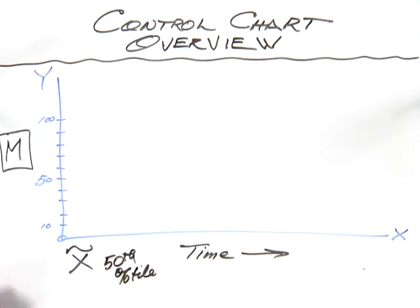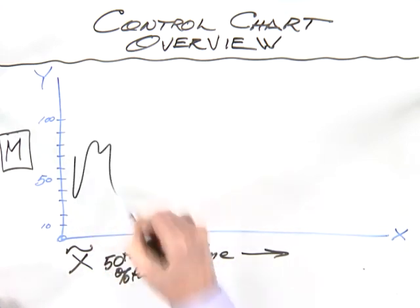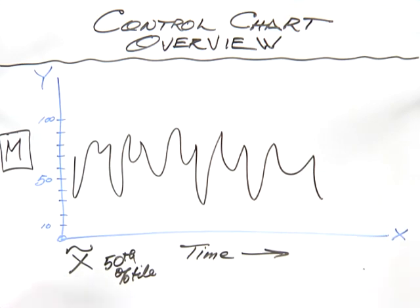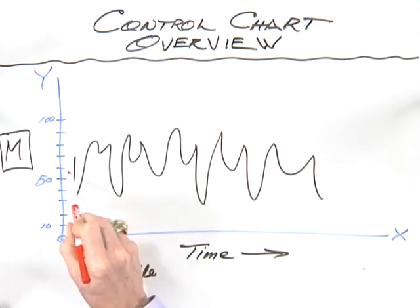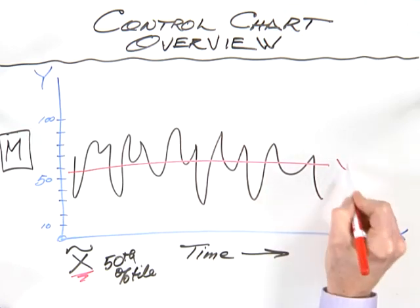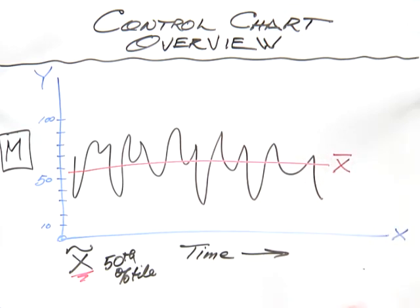What we're going to do on the control chart, however, is we're still going to have time on the horizontal, the measure of interest on the vertical, we're going to collect our data, plot our dots, but now instead of putting the median as the center line, we're going to put the mean, which is shown as X with a line above it, otherwise known as X bar.